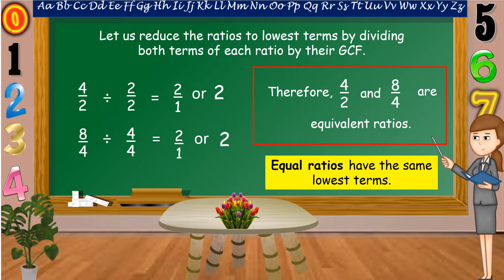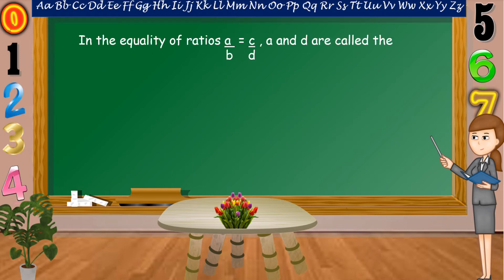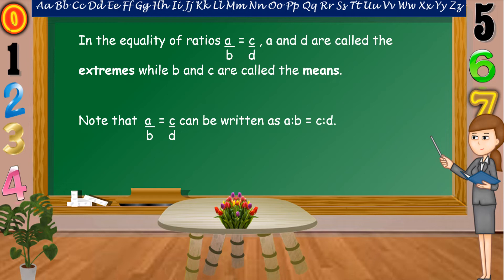Equal ratios have the same lowest terms. One way of knowing if two ratios are equal is by reducing the ratios to their lowest term. Another method to find if two ratios are equal is by the equality of ratios. In the equality of ratios, A over B is equal to C over D, where A and D are called the extremes, while B and C are called the means. Note that A over B equals C over D can also be written as A is to B equals C is to D.